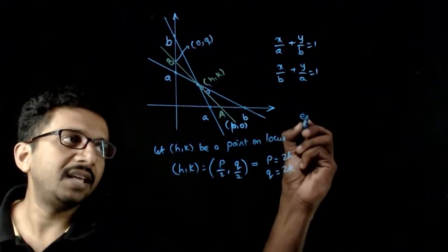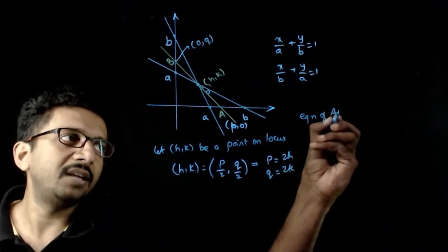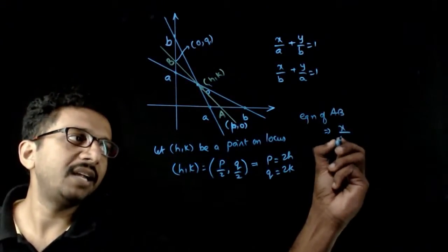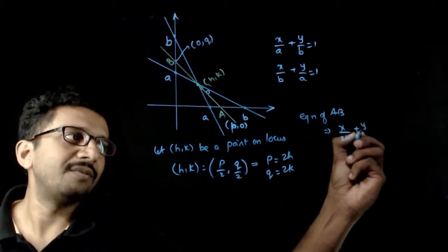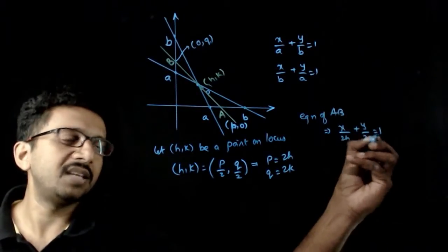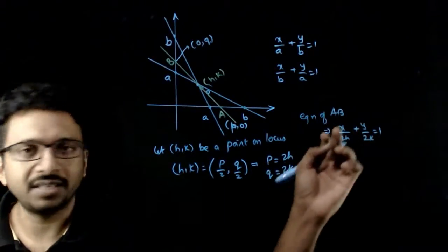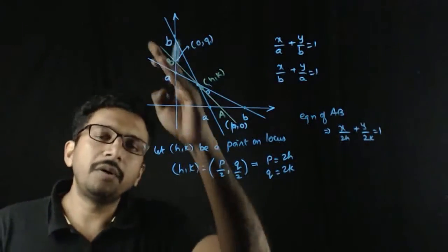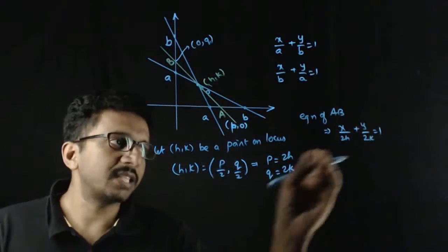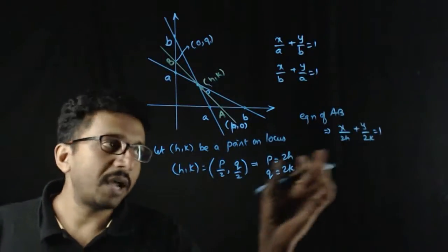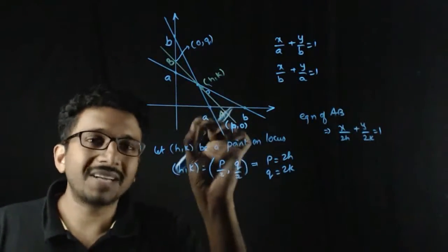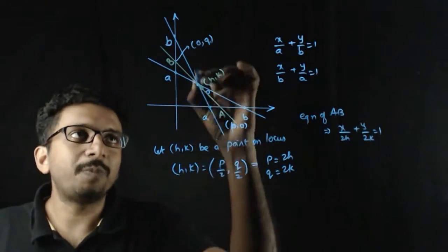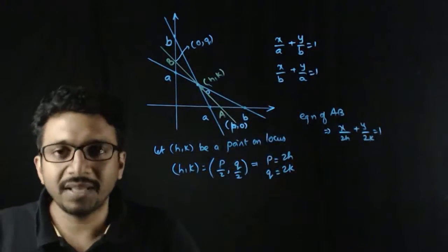Hence, the equation of line AB is x/2h + y/2k = 1, using the intercept form x/(x-intercept) + y/(y-intercept) = 1. Now, according to the question, the condition that line AB has to satisfy is that it must pass through the intersection of the two given lines.